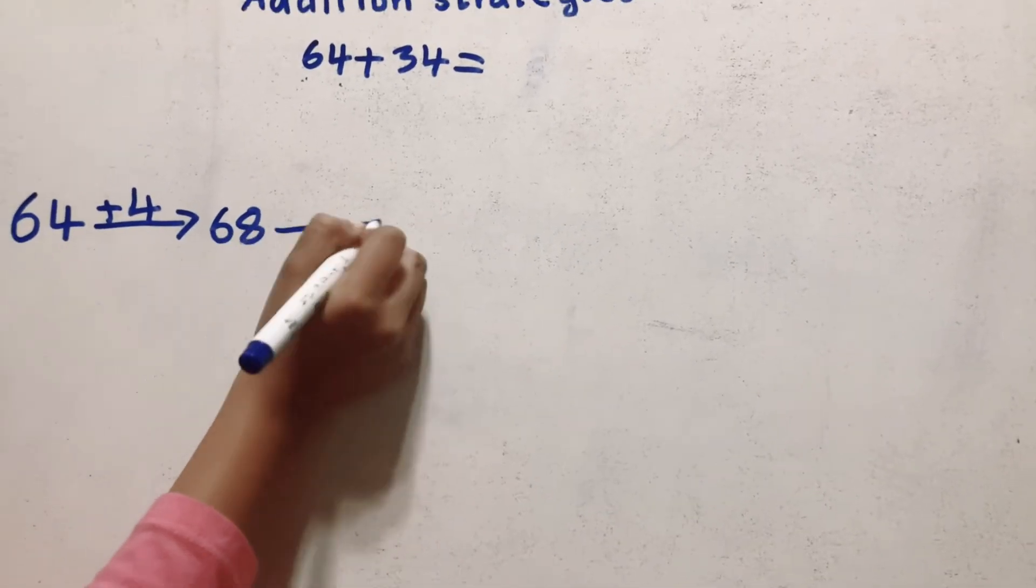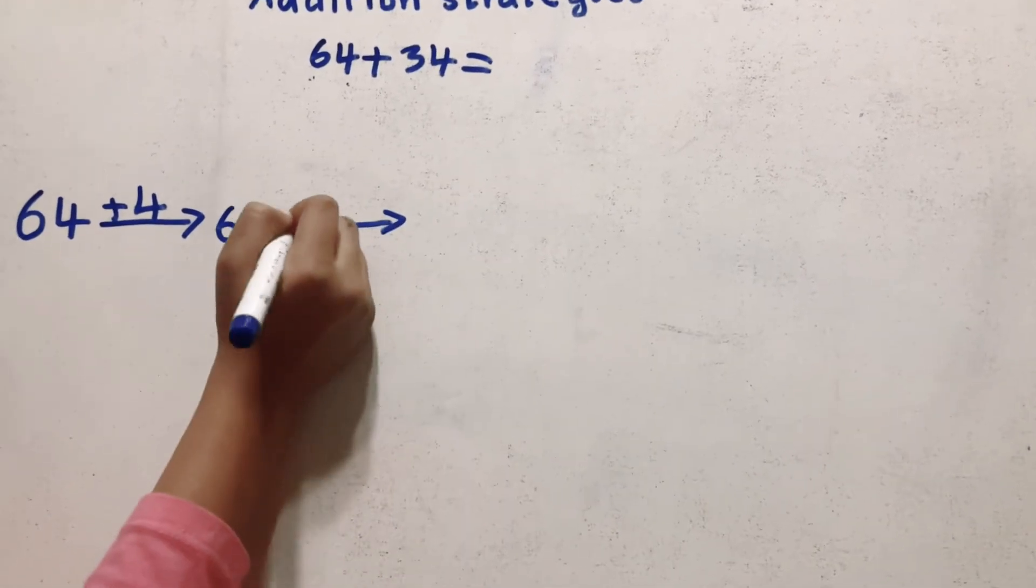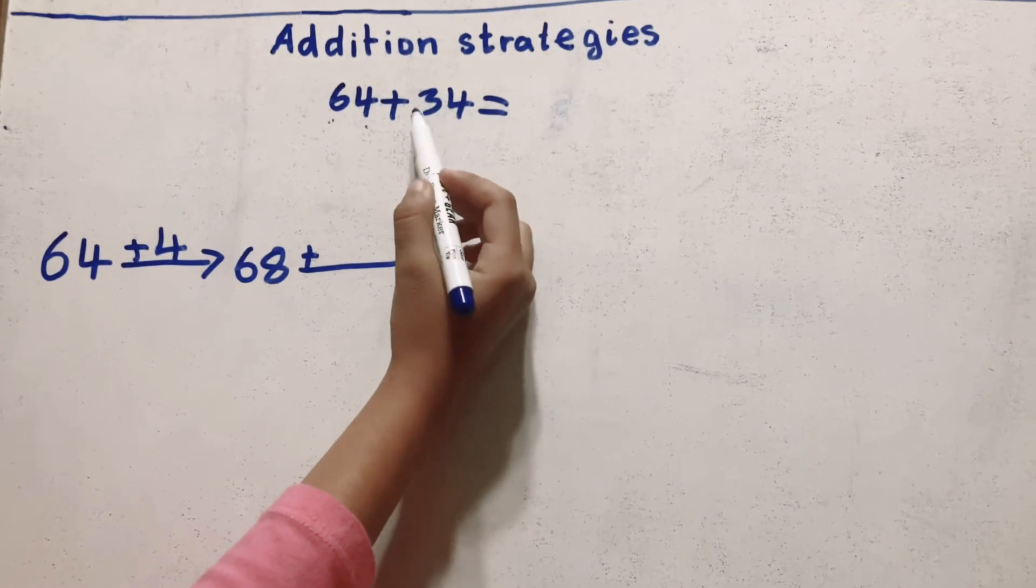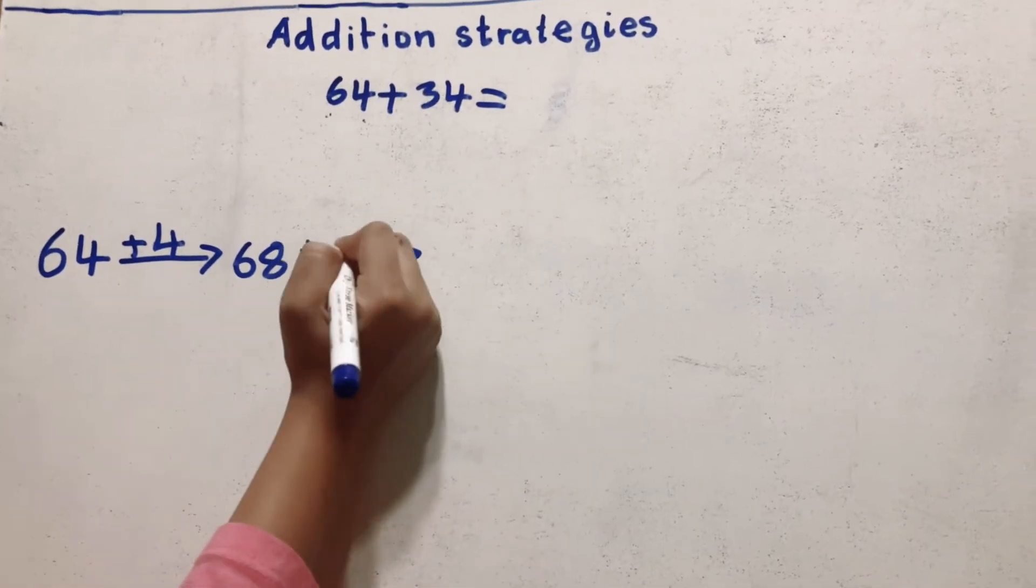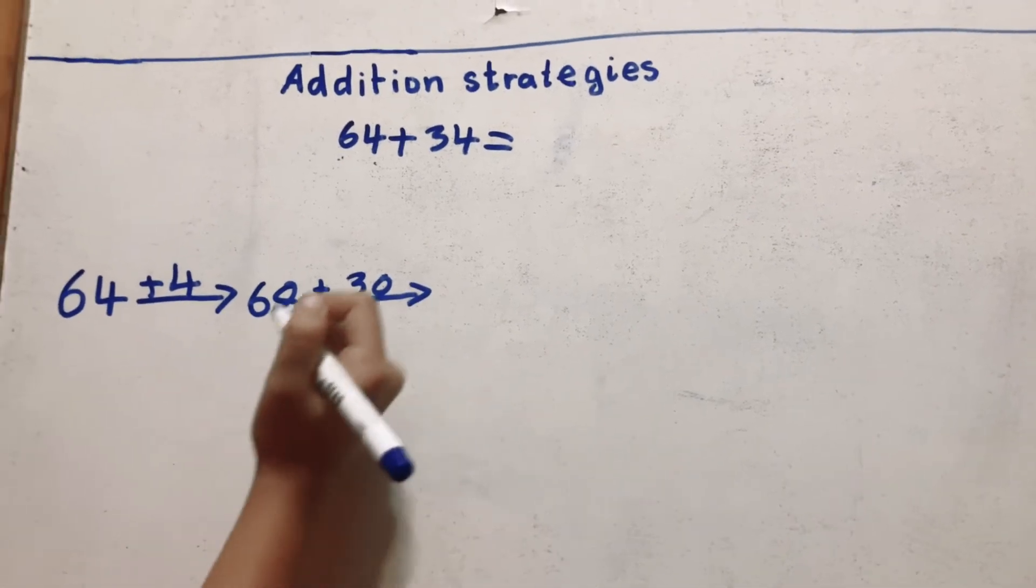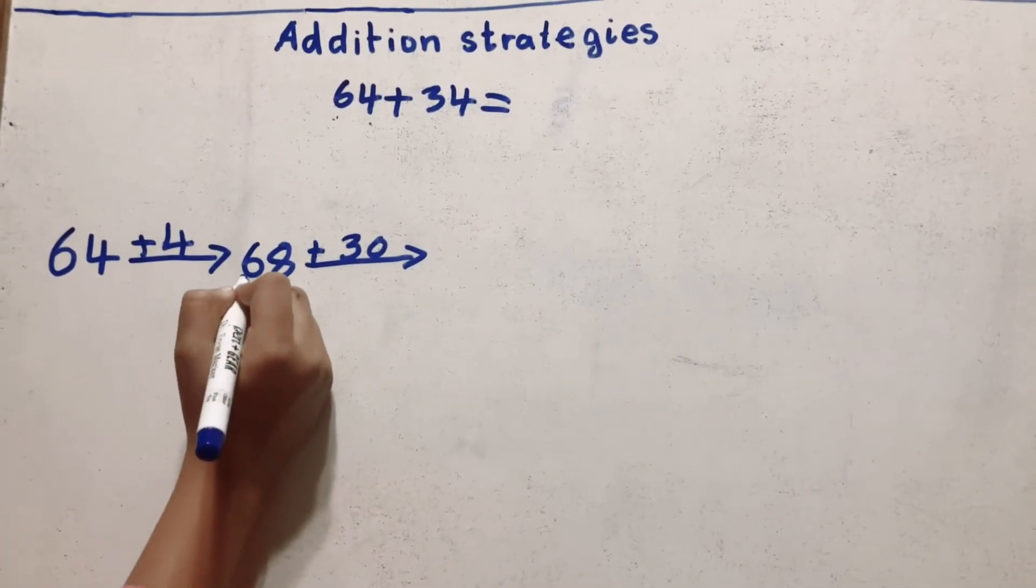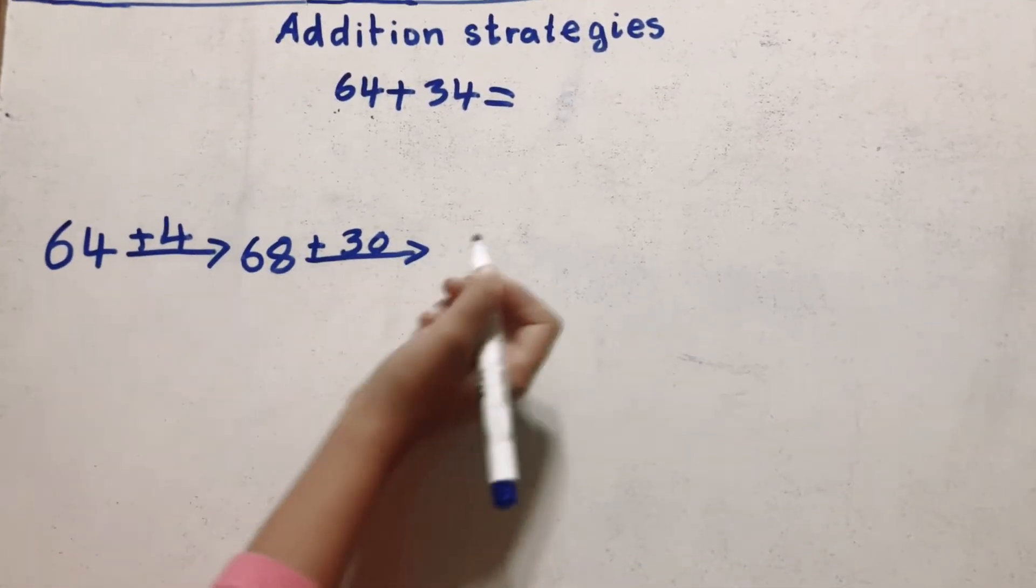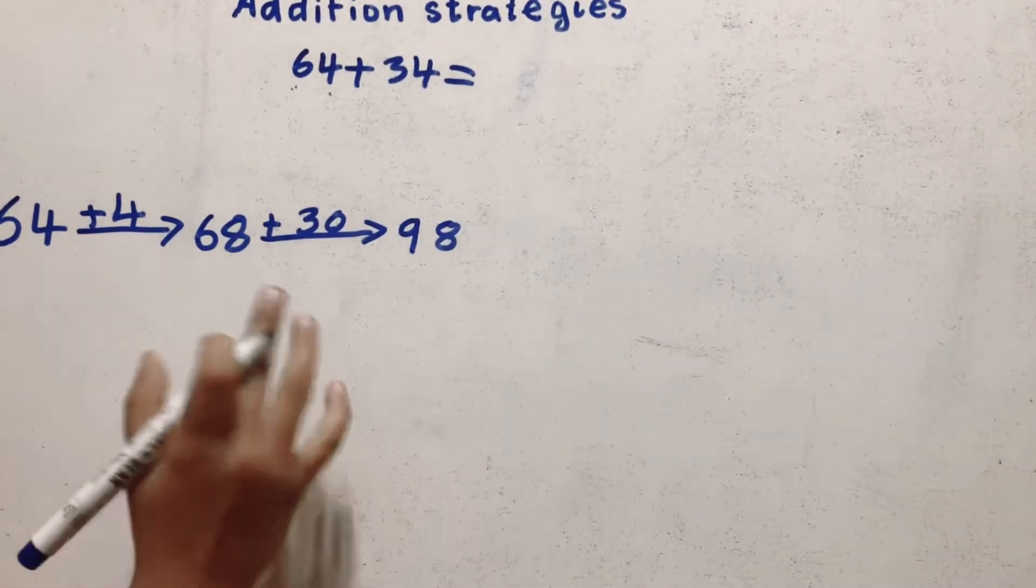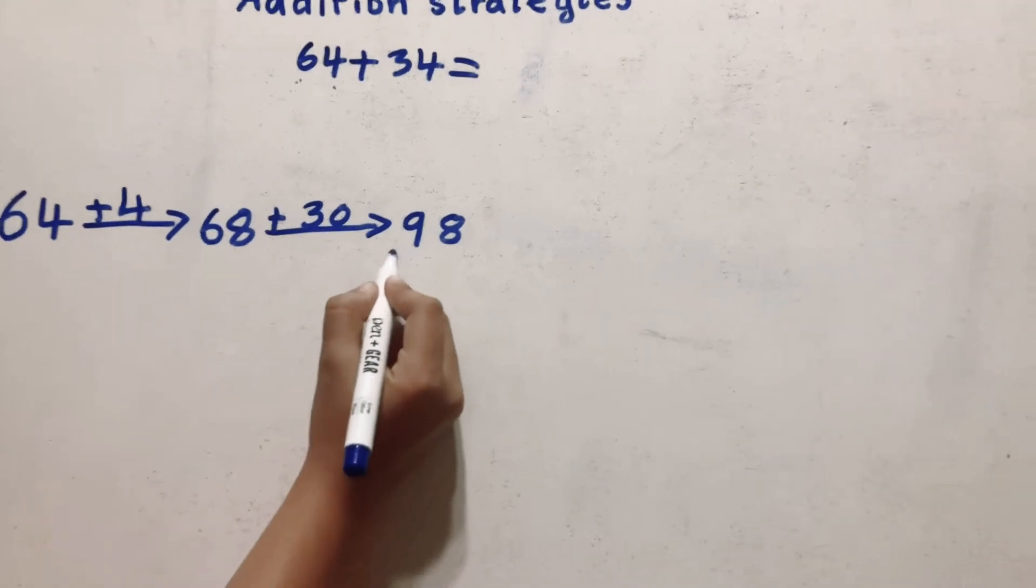So now we're gonna draw another arrow and then we're gonna do a plus and then what do we have left over? It's a 30. So you're gonna take that 30 and just put it over here. So then now you're gonna add 68 plus 30 which equals 98. So that's our answer. The answer is 98.